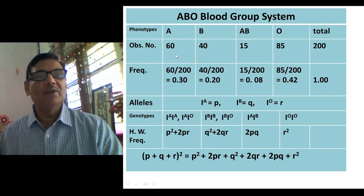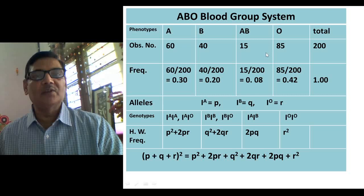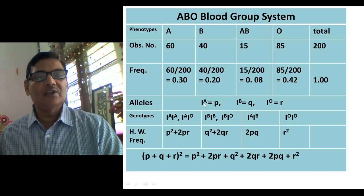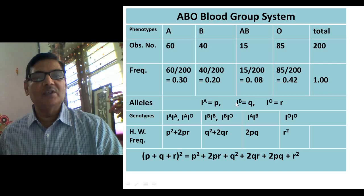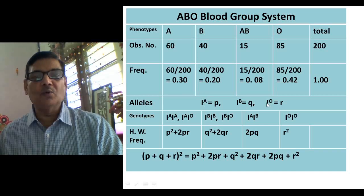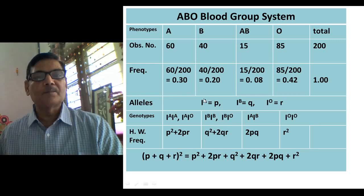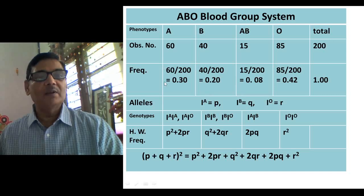Your aim is to calculate the frequency of IA, IB, and IO alleles in this population. The ABO blood group system is determined by three alleles: IA, IB, and IO. IA shows co-dominance with IB, meaning both alleles can express if present in the same individual, whereas both IA and IB are dominant over IO. With this knowledge, you can calculate the frequency of these three alleles using certain steps.